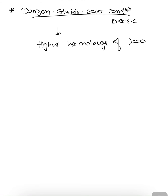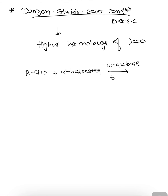In general, if we take an aldehyde and carry out the reaction with an alpha halo ester in the presence of a weak base like tertiary butoxide, we will be able to produce a higher homolog of the aldehyde. Here we are using a weak base.